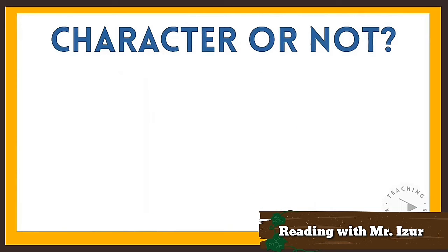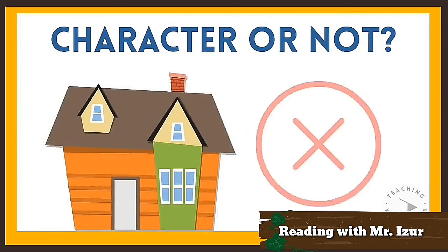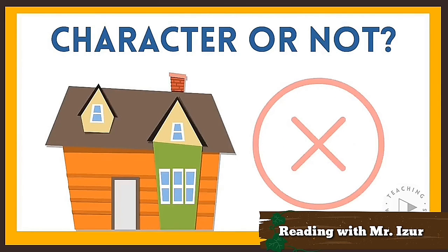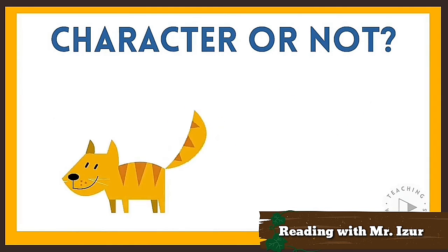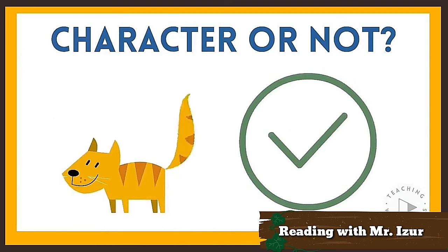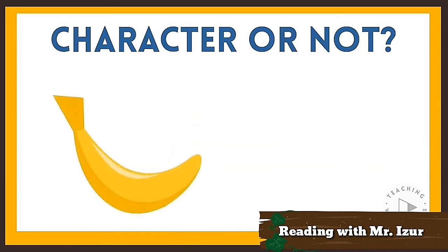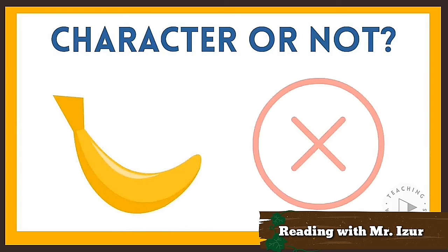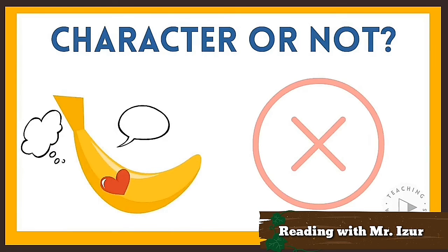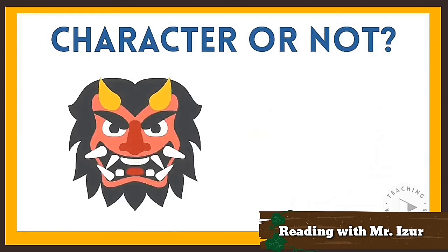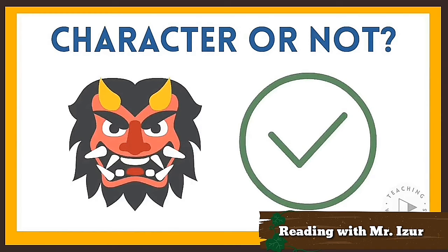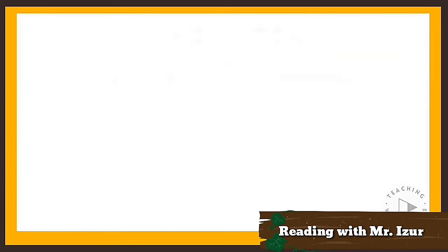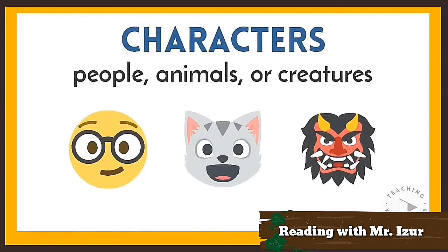Let's play 'character or not.' A nurse — character or not? Yes, a nurse is a person and people are characters. A house — character or not? No, a house is not a person, animal, or creature, so it's not a character. A cat — character or not? Yes, a cat is an animal and animals are characters. A banana — character or not? No, a banana is not a character unless it can think, feel, or act in the story.